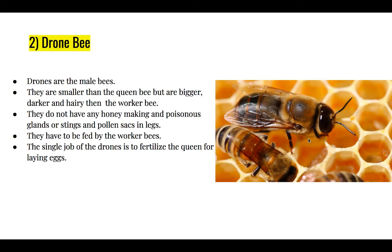The drone bee is a male bee. They are smaller than the queen bee but bigger than worker bees. They don't have honey-making glands, poisonous glands, stingers, or pollen sacks, as they are not supposed to collect pollen. They cannot even feed themselves, so they are fed by the worker bee. Their only job is to fertilize the queen bee.